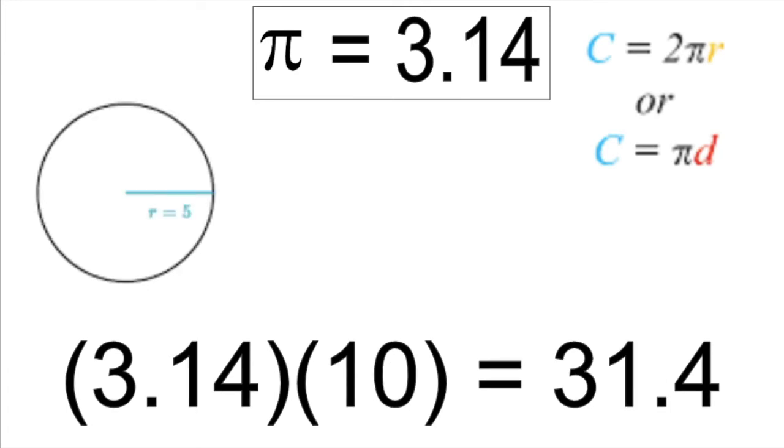If I'm given a radius, I would have to double that radius because a diameter is two radiuses. So if my radius is 5, I would do 3.14 times 10 equals 31 and 4 tenths.